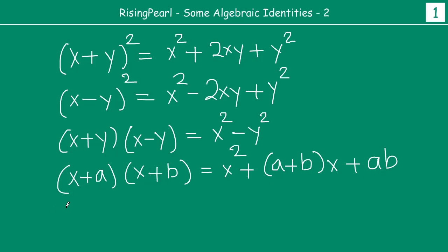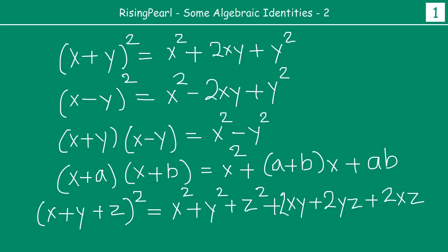And the final identity 5, if you do x plus y plus z, if you take three variables and do a whole square of that, instead of two variable square like x plus y whole square or x minus y whole square, if you take three variables x plus y plus z whole square, then this basically comes to x square plus y square plus z square plus 2xy plus 2yz plus 2xz. These are the five identities that we have seen in our last webisode.